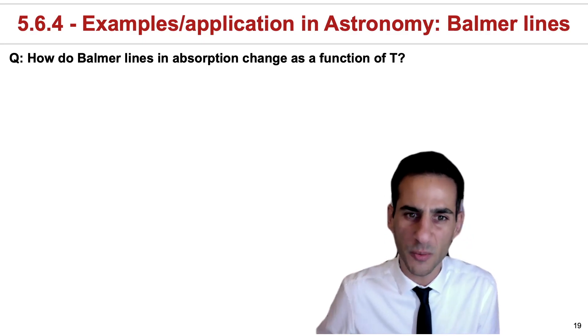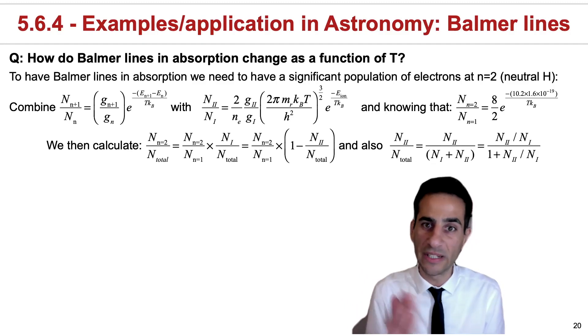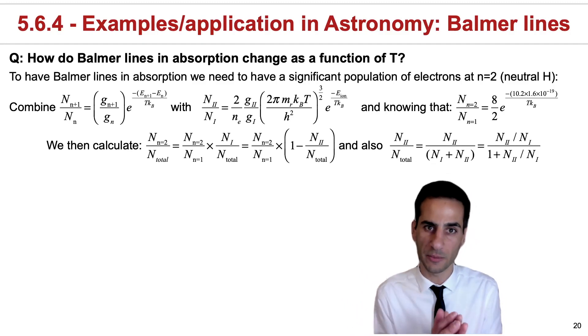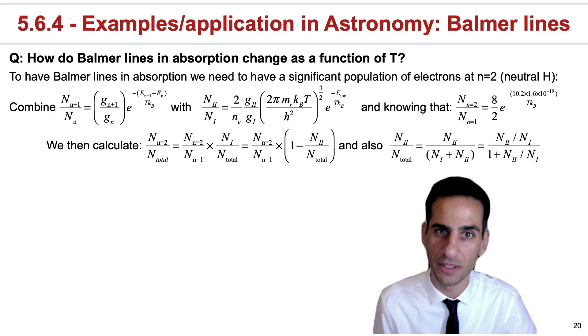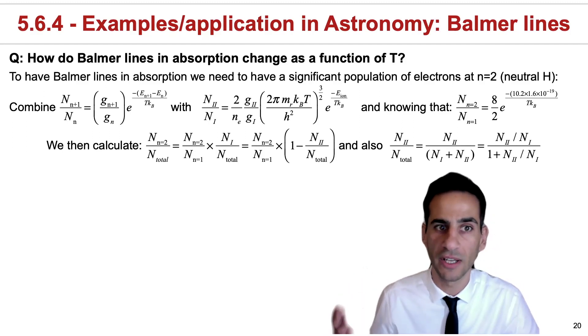In order to do this, what exactly do we need to address? Well, in practice, what we need to have significant absorption from the Balmer series is to have a significant population of electrons at n equals 2, and also to have neutral hydrogen.